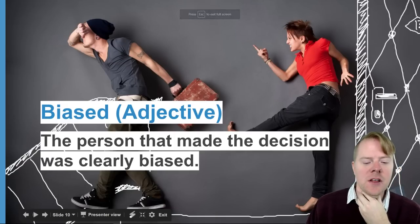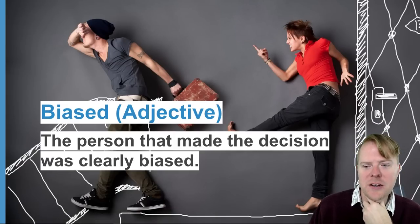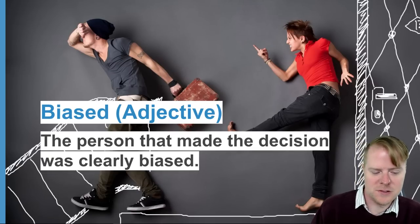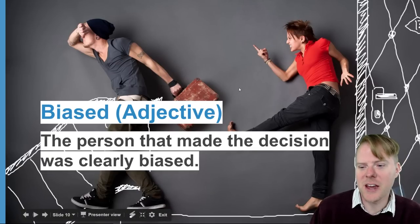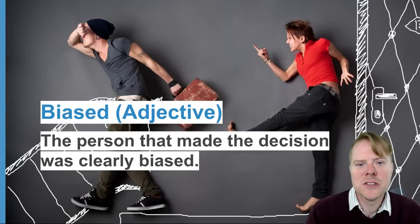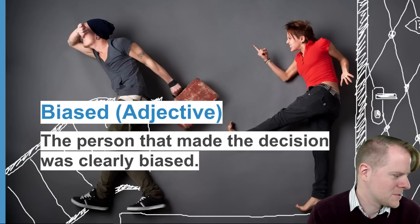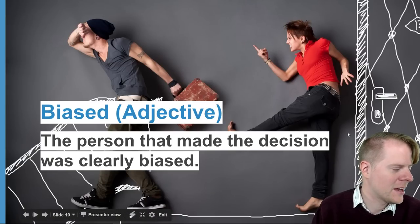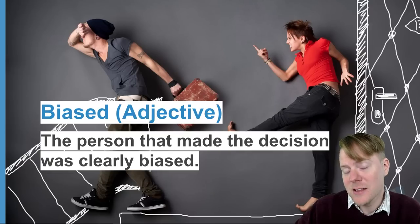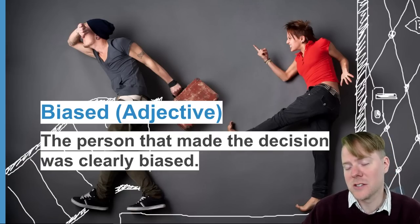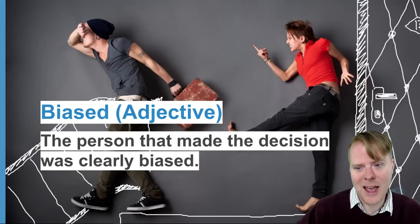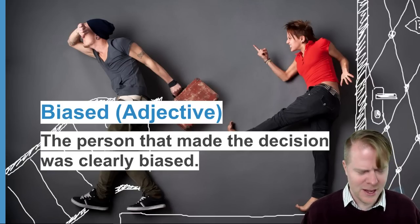Next word: 'biased' — an adjective. 'The person that made the decision was clearly biased.' Looking at the picture, she seems to be kicking him out — she has a bias against him. Biased is when you use your own opinion and feeling to make a decision. Synonyms coming in from students: unfair, prejudiced, one-sided, partial, subjective. We are all a little biased — it's hard not to make a decision based on our bias.